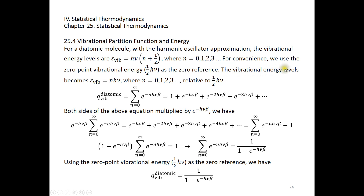The vibrational energy levels now become just n times h nu, with n = 0, 1, 2, 3, etc., relative to one-half h nu. The diatomic vibrational partition function is therefore the sum of e to the power of negative n h nu times beta, where beta is 1 over k_B T.